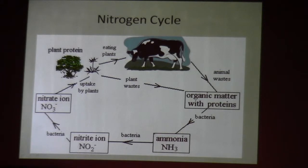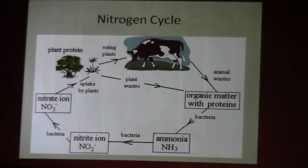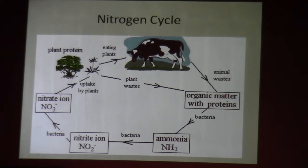The nitrogen gets into the cycle by nitrogen-fixing bacteria and nitrogen-fixing plants. Most of the nitrogen in the cycle is already in the cycle — some gets lost and has to be replenished by things that put nitrogen back in.